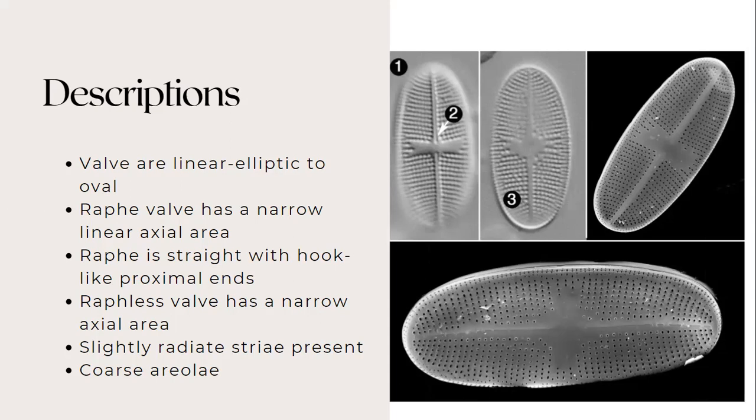The raphe also has a straight with hook-like proximal ends. It also has a rapheless valve that has a narrow axial area. And its striae are slightly radiate and it has a coarse areola.